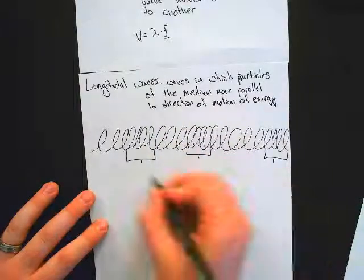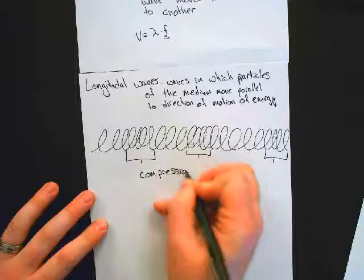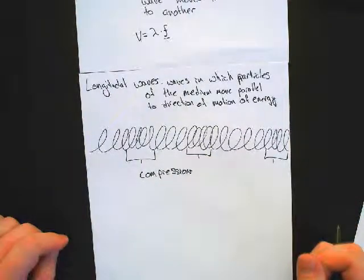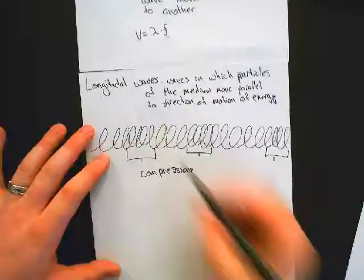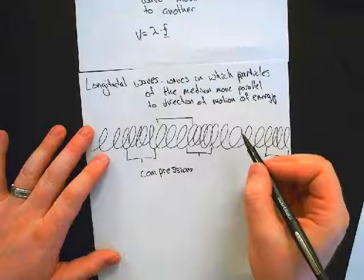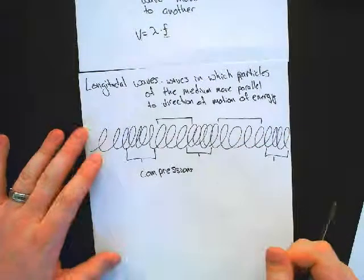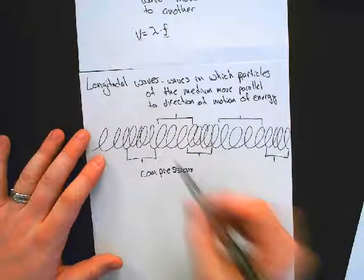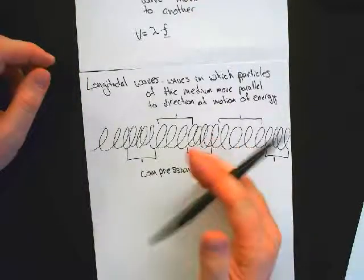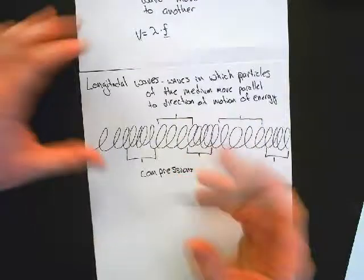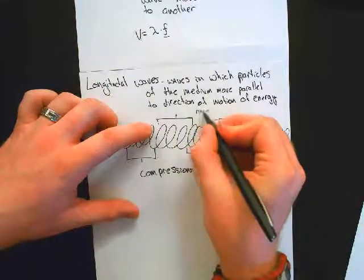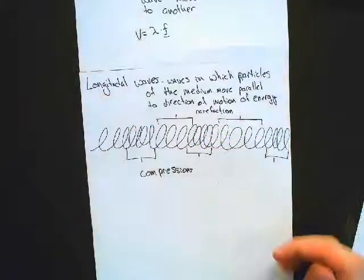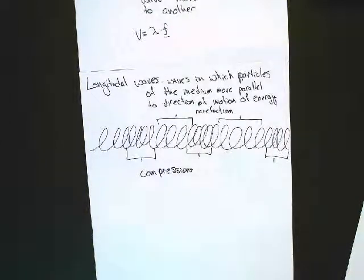They roughly translate to the longitudinal version of a crest. We can create crests of a wave with a compression of a wave next Wednesday. These sections where there are fewer loops per segment, those are what we're going to call rarefactions, and they roughly translate to troughs. Questions about parts of a longitudinal wave?